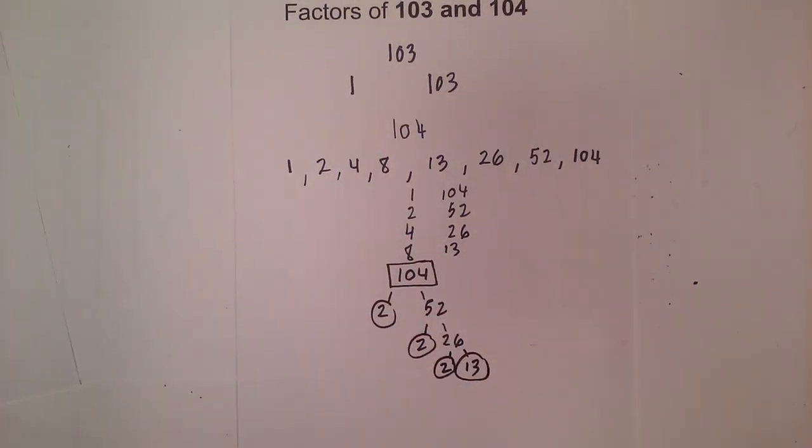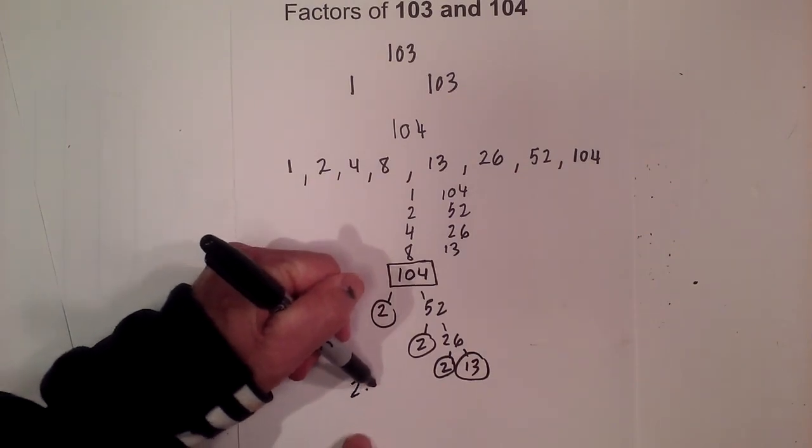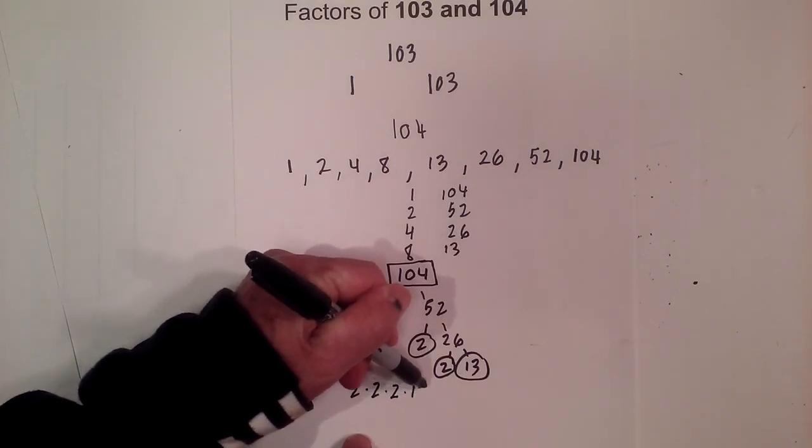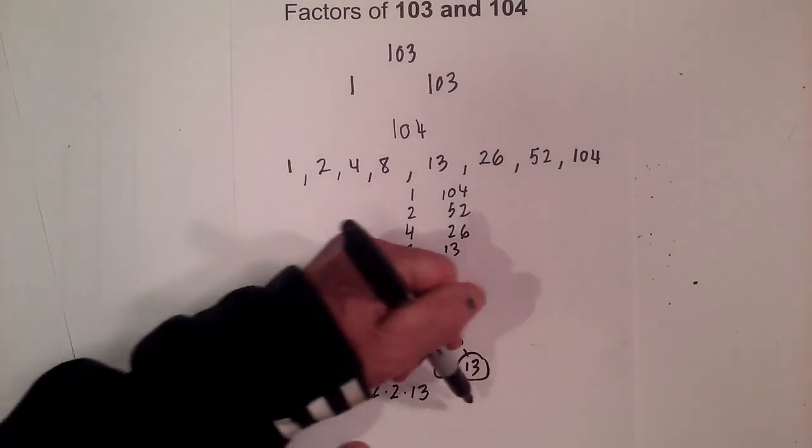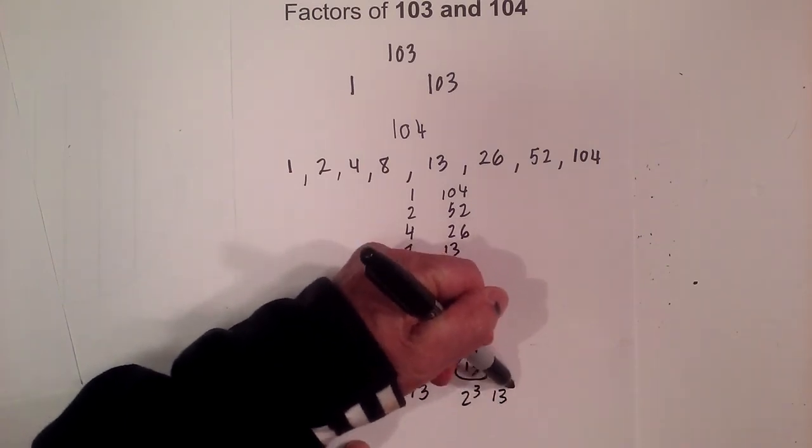I'm now down to just prime numbers. So the prime factorization for 104 is 2 times 2 times 2 times 13. Or you could write this as 2³ × 13.